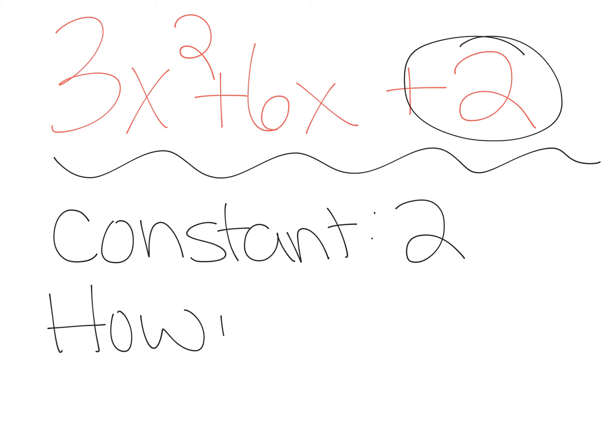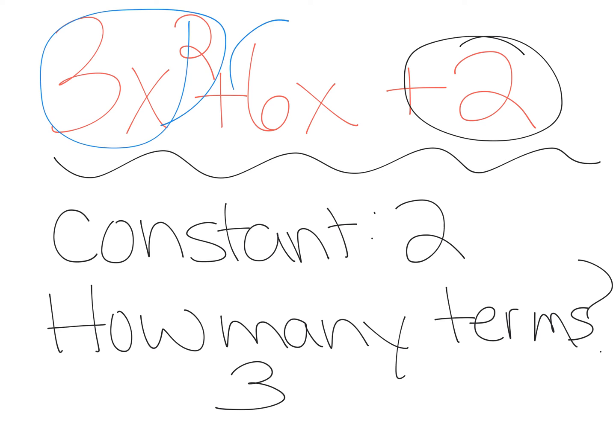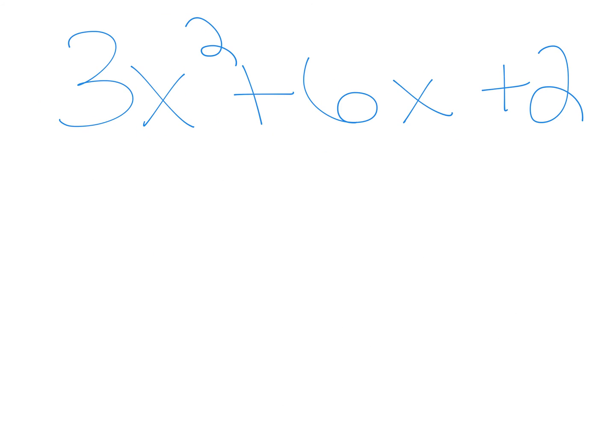How many terms? You should have said three: one, two, three. What is the variable in this expression? We have x and then we have the variable x squared - two separate variables.